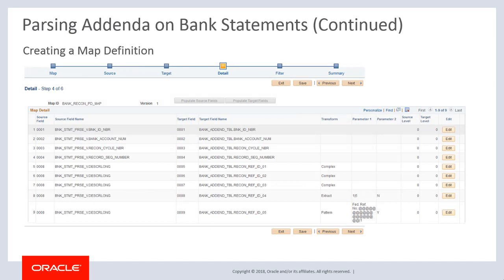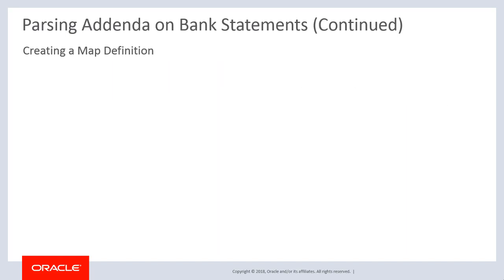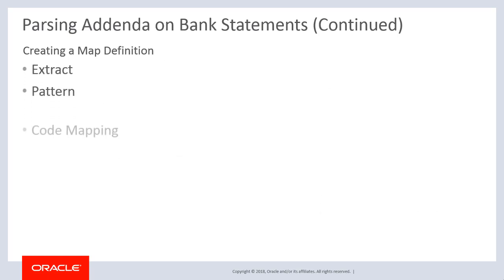Next, use the details page to populate the transformation attributes relevant for parsing addenda information. The Data Export Import Utility is a generic tool that supports many different transformations; some delivered transformations may not be relevant for parsing addenda. Transformations relevant to parsing addenda information include Extract, Pattern, Code Mapping, and Complex.